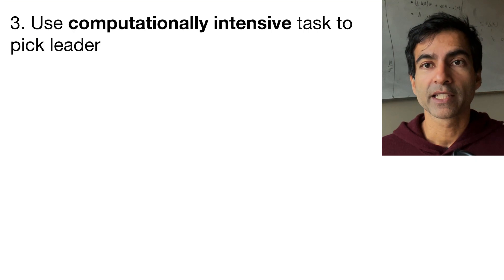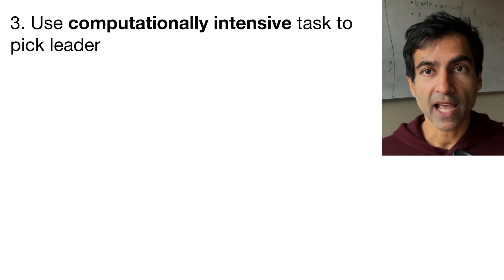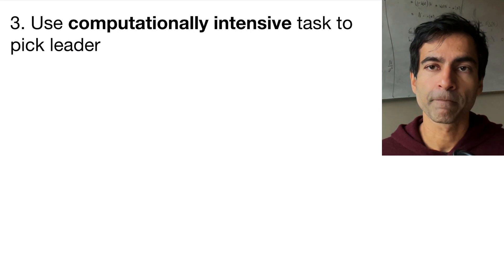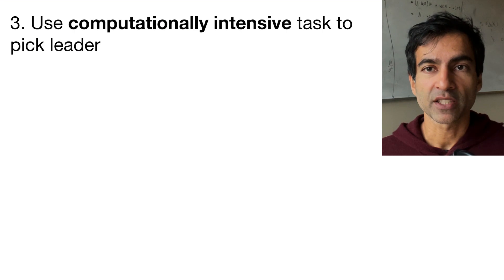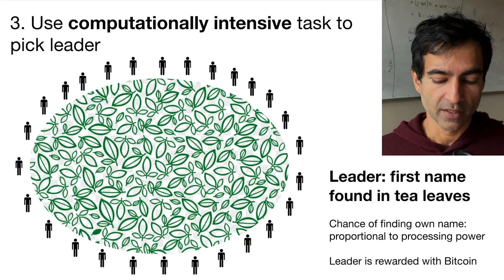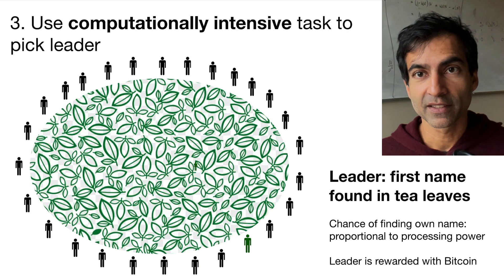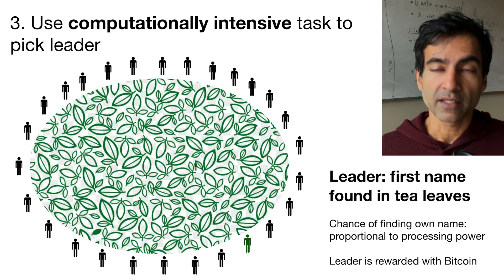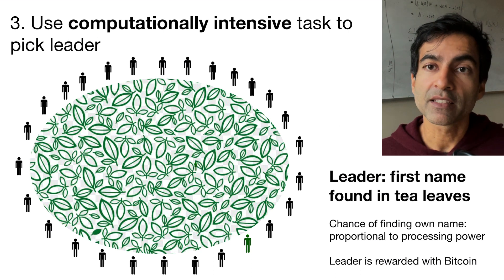The final big idea used in Bitcoin is that we can use computationally intensive tasks to actually pick who will be the next random leader. To explain what's going on here, I want to use an analogy which I think is pretty accurate. It's kind of like we're going to have a huge mess of tea leaves in the middle of the network that everyone knows about, and to pick the next leader, we will try to find someone's name — the name of the next leader — in the tea leaves.